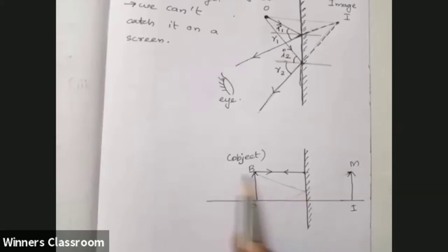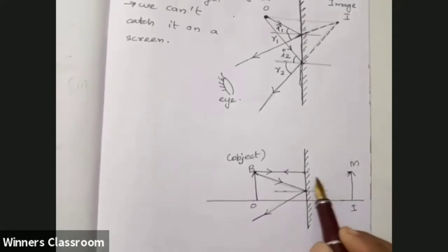A light ray comes here. A light ray comes from this point. A light ray comes from this point. And it will get reflected like this. Real light rays are not meeting at any point. We will get the image here.